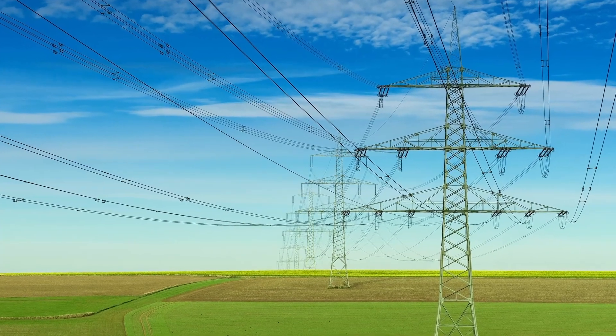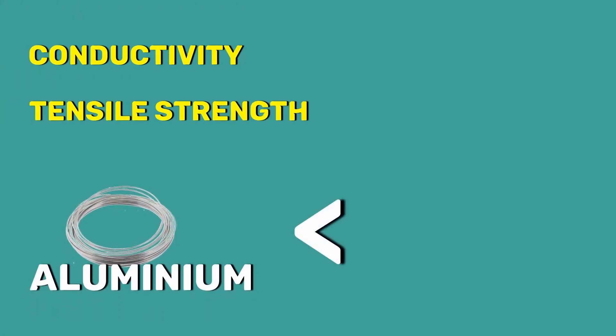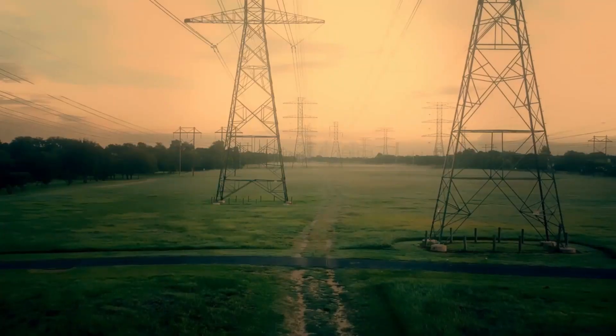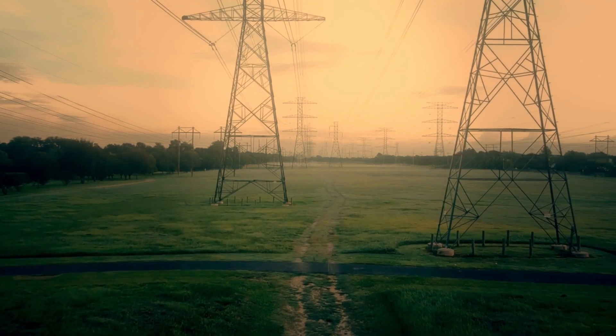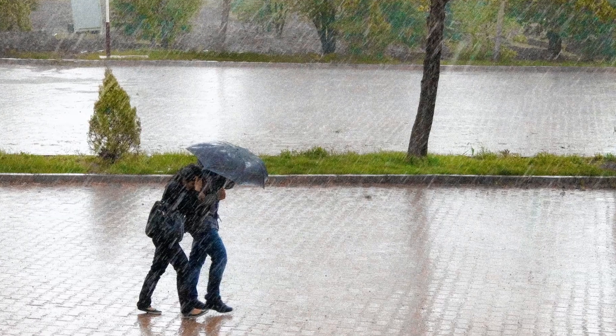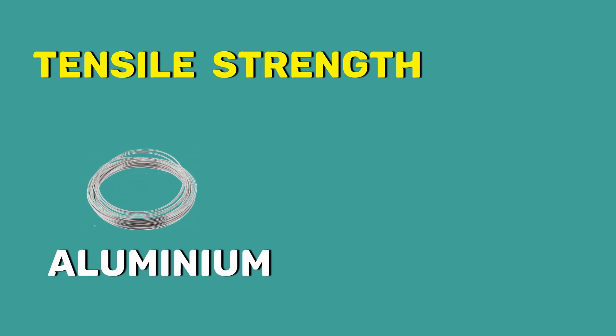However, nowadays we are using aluminium instead of copper. Even though the conductivity and the tensile strength of aluminium are less compared to copper, the cost and the weight of aluminium are low. The transmission line should have the highest tensile strength because it has to withstand heavy rain and wind. So, to increase the tensile strength of aluminium, steel is added to it.